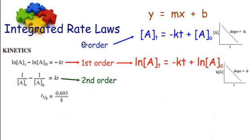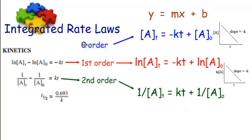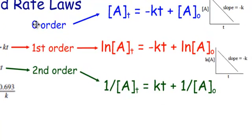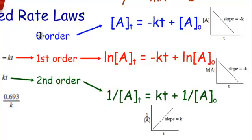They also give you the equation for second order. I manipulated that equation to move the one over A-naught to the other side so it's in y = mx + b format. For second order, if I graph not concentration, not natural log of concentration, but one over the concentration versus time, and that gives me a positive slope, then I know I have second order. So you can know what order the reaction is based on which graph gives you a straight line.